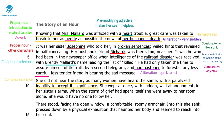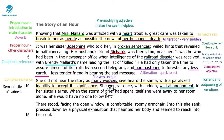The complex sentence 'she did not hear the story as many women have heard the same, with a paralysed inability to accept its significance' is interesting because it shows that contrary to what society expects, Mrs Mallard has a slightly different reaction to learning she is a widow. The mention of 'many women' shows she is quite unique. Chopin uses the semantic field of sadness and grief — 'wept' and 'grief' — but 'wild abandonment' suggests something torrent and freeing, foreshadowing that this death might be quite liberating for Mrs Mallard.